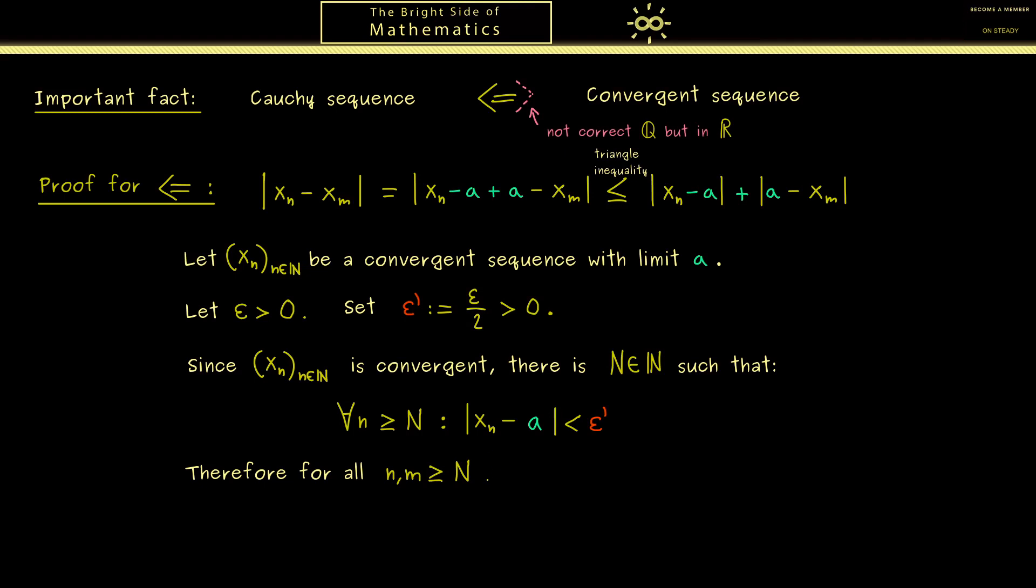Namely we now can consider 2 indices that are both greater than the capital N. And then we just calculate the distance between both sequence members. Obviously now we want to use our calculation from above. And now by assumption for the indices we know this is less than epsilon prime and this is less than epsilon prime. So both things together are less than 2 times epsilon prime, which is by our definition just the original epsilon.